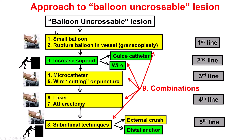When faced with a balloon or microcatheter uncrossable lesion, the algorithm starts with a small balloon — which we tried using the Sapphire balloon. If that doesn't work, options include Absorbshun, increasing support with a guide extension, trying a microcatheter (the Turnpike LP did not work here), wire cutting or puncture (which would have been difficult in our case), laser, atherectomy (which would require losing position — not optimal in the extra-luminal space), or sub-intimal techniques (problematic here due to risk of compromising side branches).